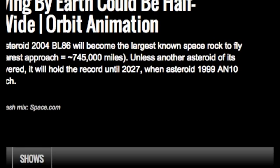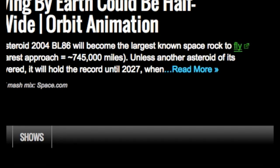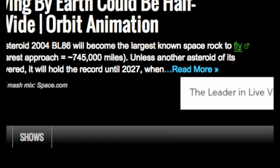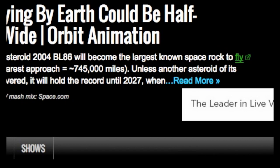Astronomers will track asteroid 2004 BL86 with radar during its flyby by using the massive dish-shaped antennas at NASA's Deep Space Network in Goldstone, California, and the Arecibo Observatory in Puerto Rico. These radio dishes will beam microwave signals at the asteroid, which will then bounce off the target and return to Earth.